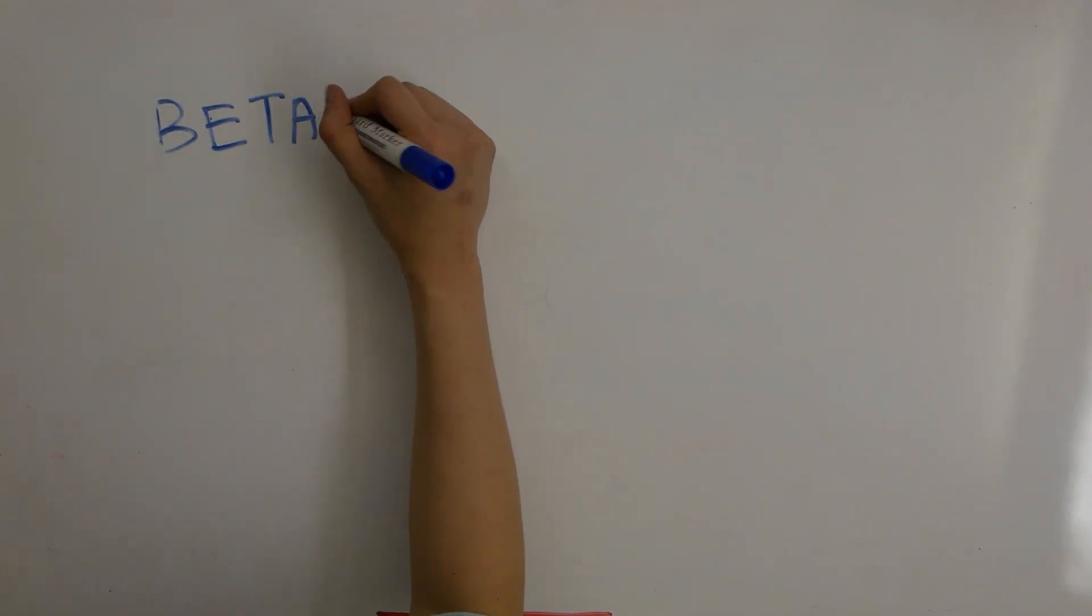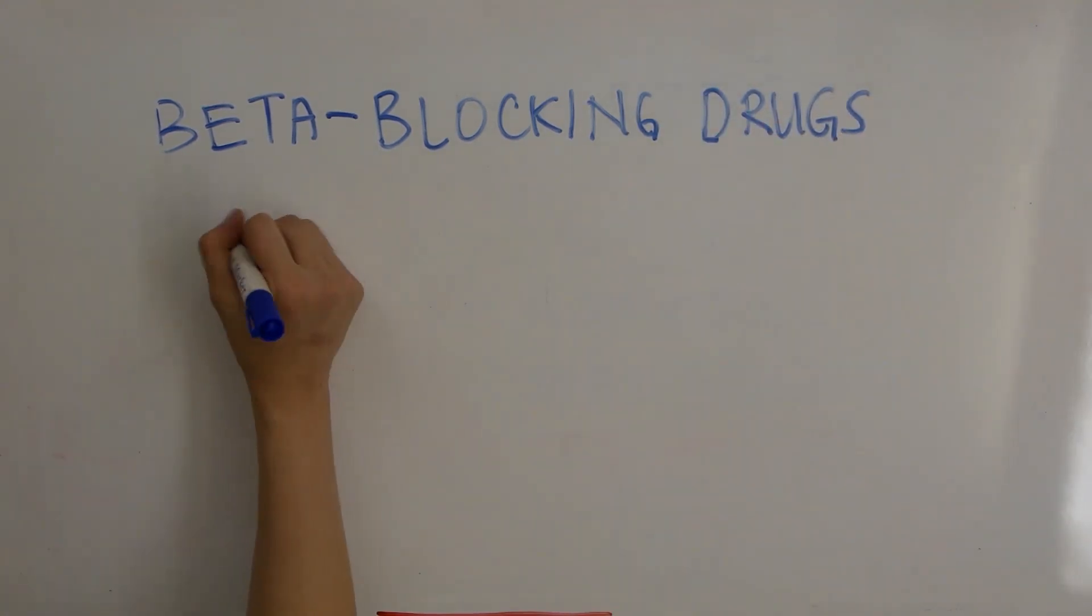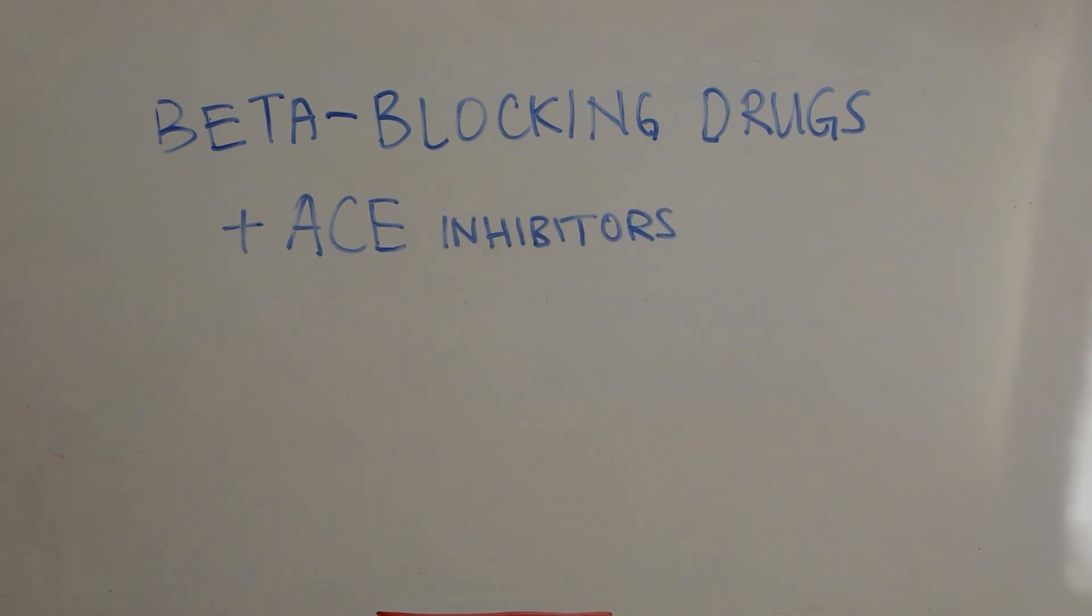beta 1 and beta 2 receptors. Selective blockers only work at beta 1 receptors. Beta blockers are generally the last medication to be prescribed. They are used with other medications such as angiotensin-converting enzyme inhibitors and only when other